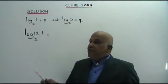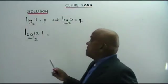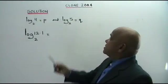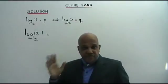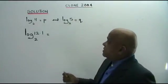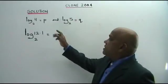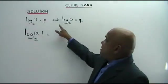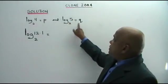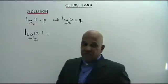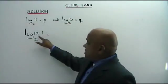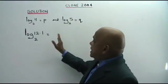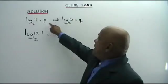Hi. Here I have for you another clone question based on the year 2004. Now you're given log 11 base 2 equals P and log 5 base 2 equals Q. And you are asked to give this value log 12.1 base 2 in terms of P and Q.